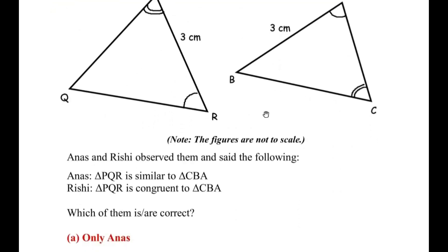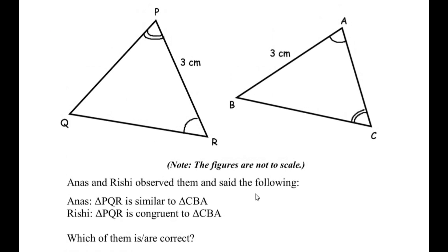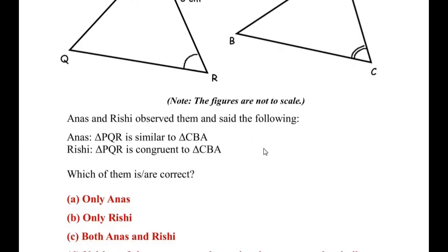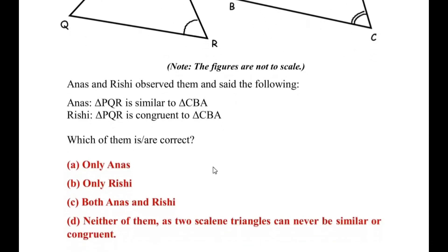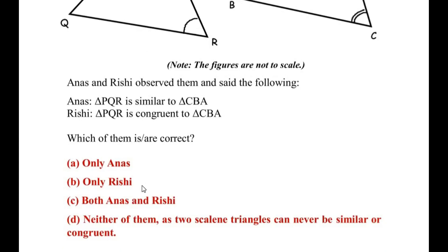Anas and Rishi observed them and said the following. Anas said that triangle PQR is similar to triangle CBA and Rishi said that triangle PQR is congruent to triangle CBA. Which of them is or are correct? Only Anas is correct or only Rishi is correct? Both are correct or neither of them are right?